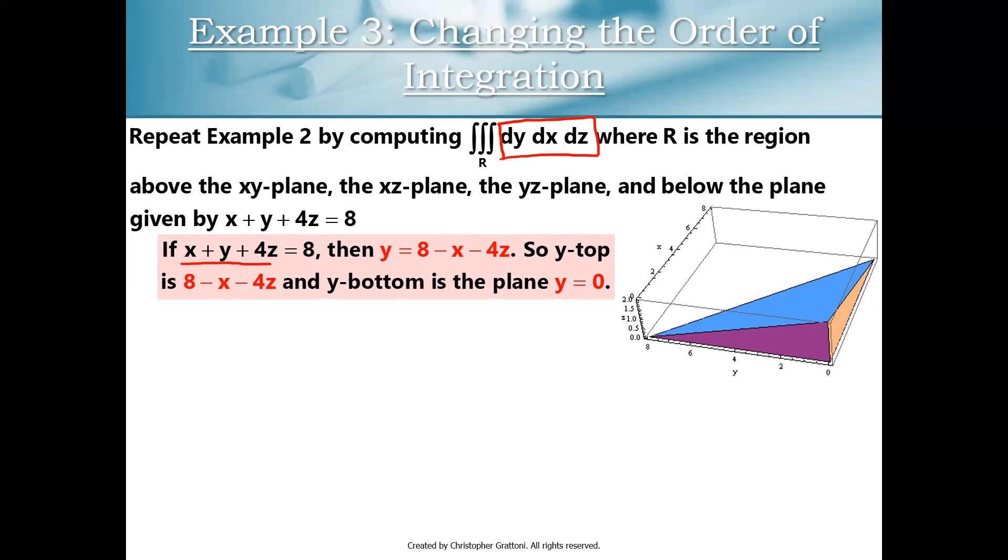We're still going to take X plus Y plus 4Z equals 8. Instead of thinking about a Z top and Z bottom, we're going to think about a Y top and a Y bottom. I'm going to take that equation and solve it for Y, and that gives you Y equals 8 minus X minus 4Z. That's my Y top. My Y bottom is the plane Y equals 0, also known as the XZ plane. You can see it in the picture. If you imagine Y being your top and bottom now, this is your Y top, and your Y bottom is this little triangle right here that sits on the XZ plane.